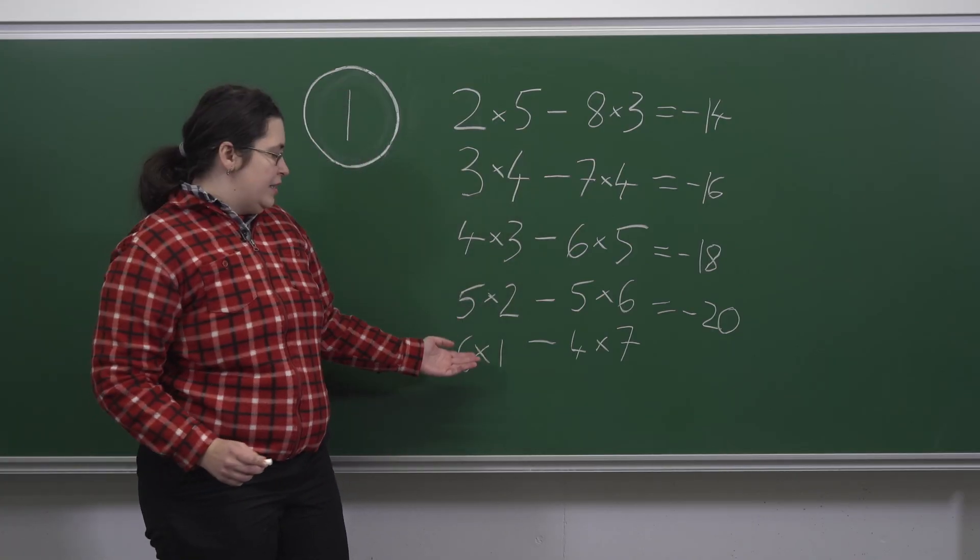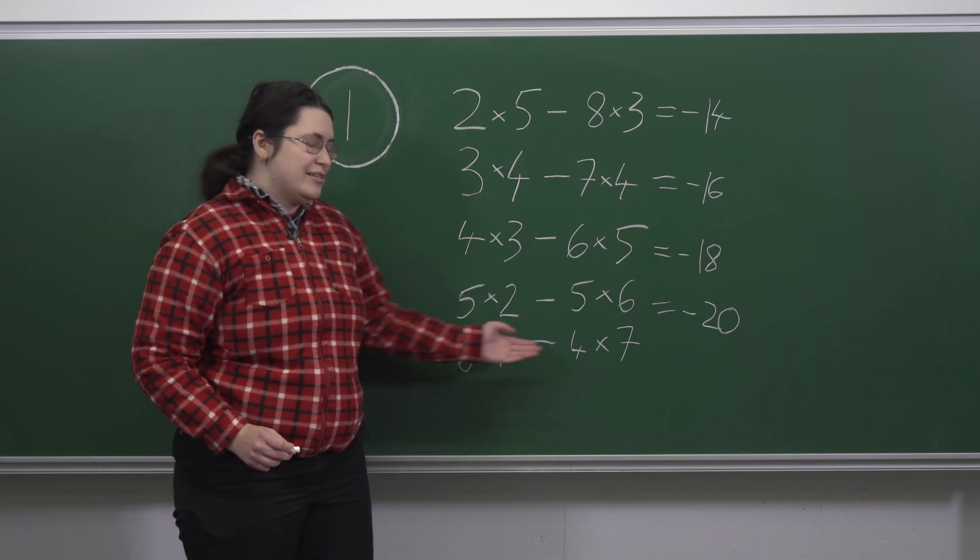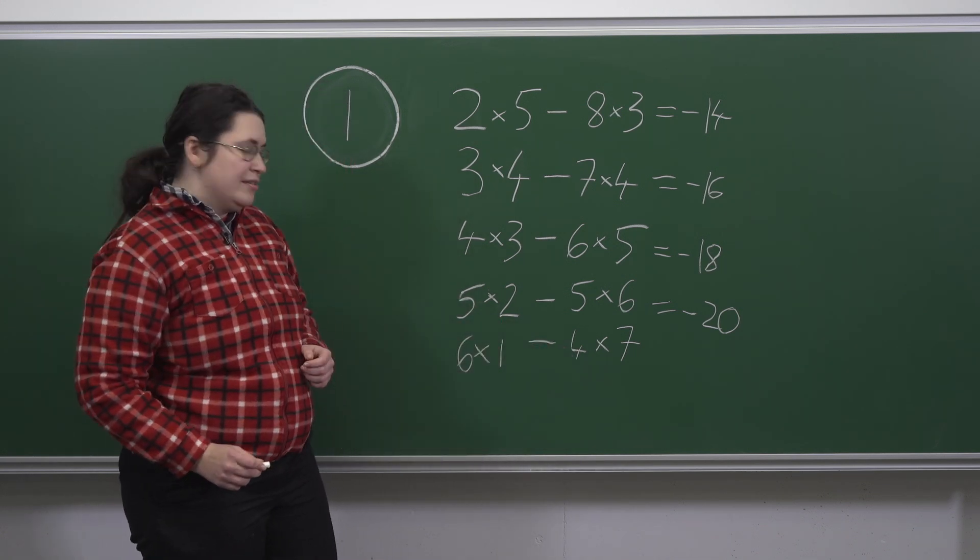And finally, 6 times 1 is 6, 4 times 7 is 28, 6 minus 28 is minus 22.